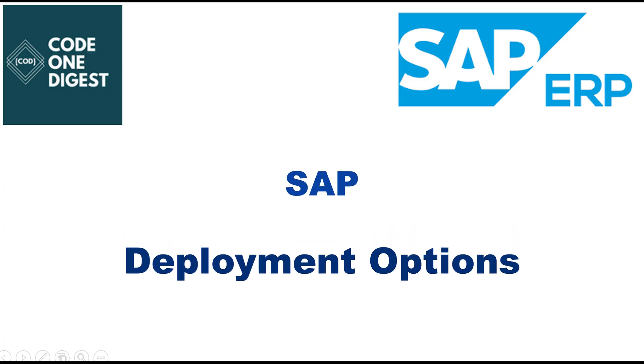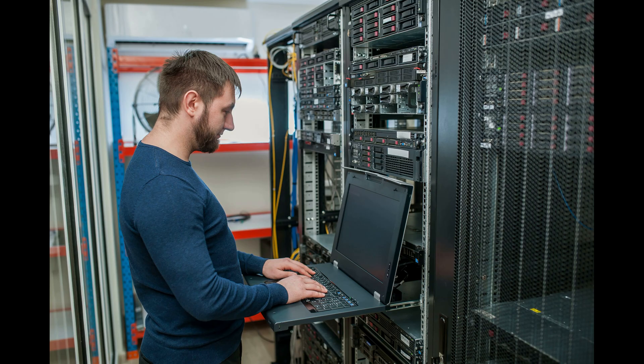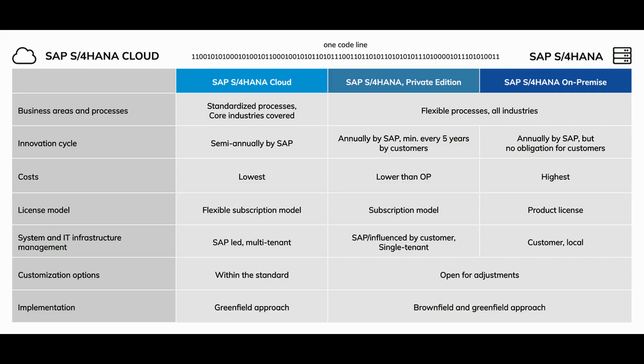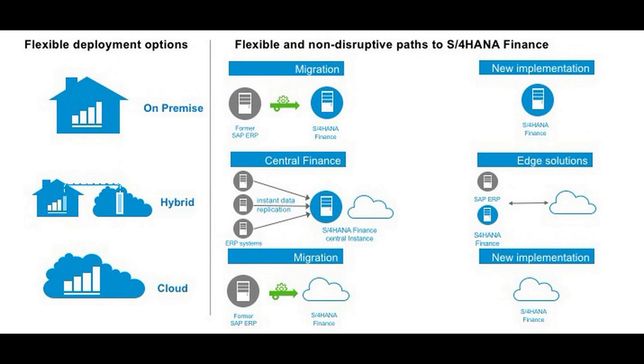Fourth, Deployment Options. The available deployment options also differ between the two systems. SAP ECC is traditionally deployed on-premise, meaning the software is installed on the company's own servers. SAP S4 HANA offers more flexibility with multiple deployment options including on-premise, public cloud, private cloud, and a hybrid approach. This allows organizations to choose the best model for their business needs and IT strategy.